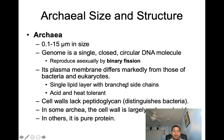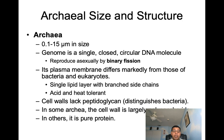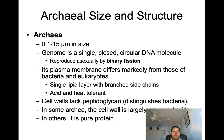Archaea are usually found ranging in size from about 0.1 to about 15 micrometers. Their genome is a single, closed, circular DNA molecule. Archaea reproduce asexually by binary fission. They have a monolayer of lipids — a single layer with branched side chains instead of a lipid bilayer found in eukaryotic cells. This characteristic helps archaea tolerate acidic and hot environments.